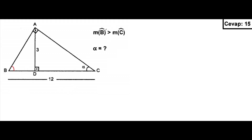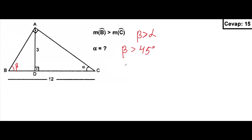We're given that angle B is greater than angle C, so we can write down this angle as beta, and beta is greater than alpha. We know that this angle is 90 degrees, which means that beta is greater than 45 degrees and alpha is less than 45 degrees. This will help at the end when we write down the answer.